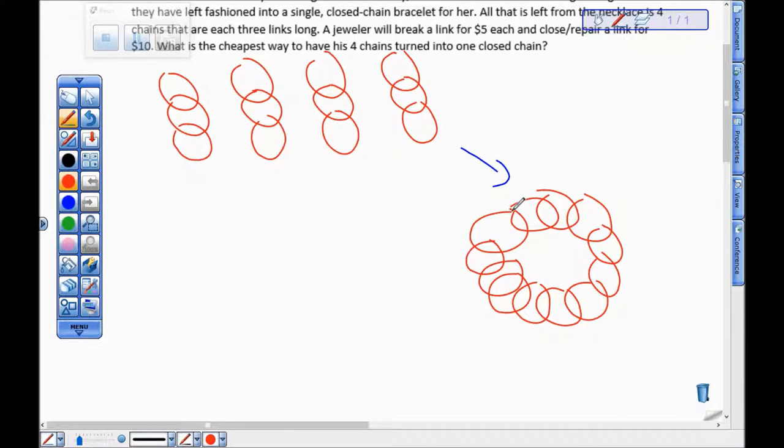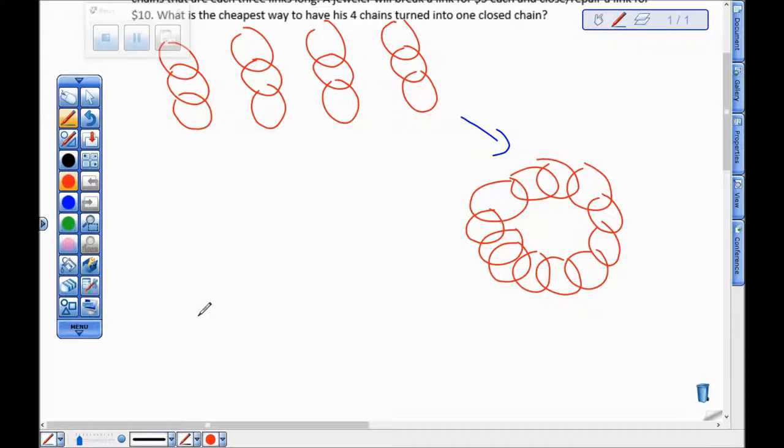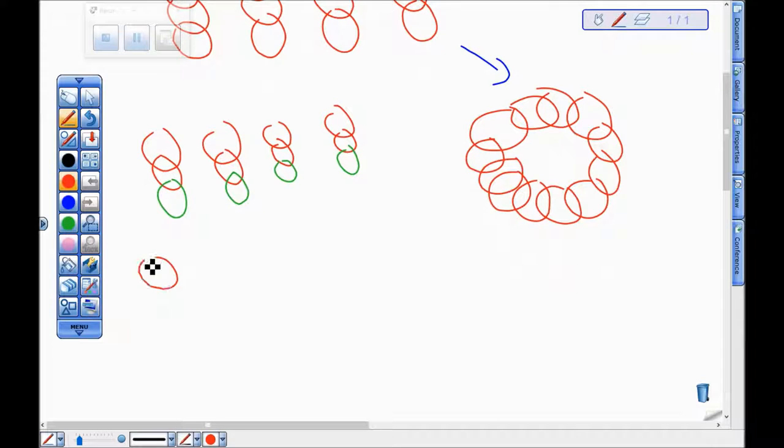Into this. Now the fastest way it seems to do that - at least it seemed to me when I was first looking at the problem - would be to take each of the chains and just break the last link. So if I break these green guys, then I can use them to basically attach every set of three pieces together.